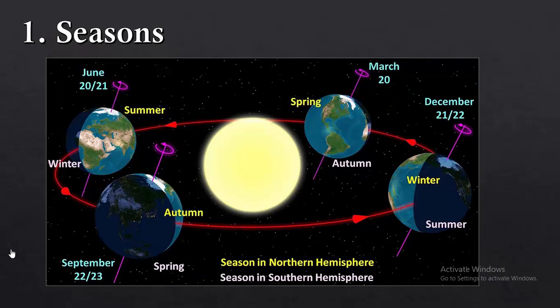Moving on to the effects of revolution. The first one is seasons. Seasons have four types: spring, summer, autumn and winter. Earth's seasons are a direct result of Earth's 23-degree axial tilt. Without an axial tilt, we would not have seasons as we do, and life on this planet could have developed much differently. This obliquity means that during certain parts of the year, the southern hemisphere is slightly more exposed to the sun's rays while the northern hemisphere is less exposed, and vice versa. This results in temperature shifts, meteorological differences, and varying light and energy from the sun — which we know as seasons.